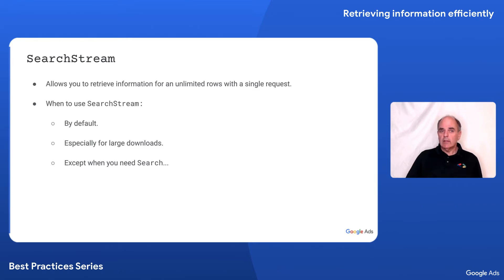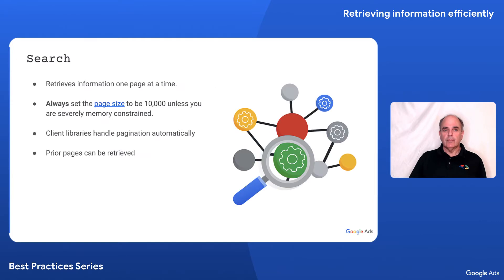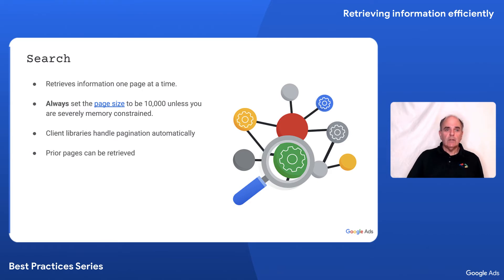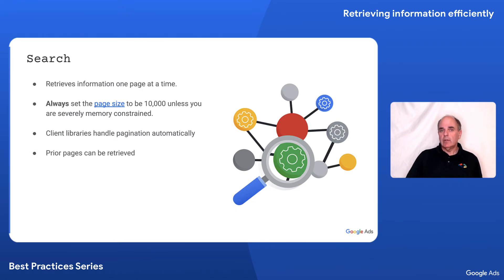But there are cases where search is the more appropriate method. Search retrieves one page at a time. A page is an arbitrary number of rows, from as little as one up to 10,000. You should always set the page size to the maximum of 10,000 unless you are severely memory-constrained. The client libraries handle pagination automatically. As you go through the sets of rows and reach the end of the page, the next page will be automatically requested behind the scenes by the client library. If you are using the REST API, you have to handle this pagination yourself.